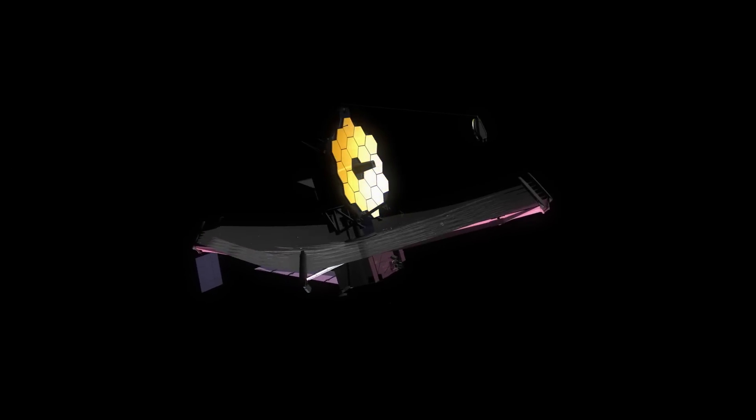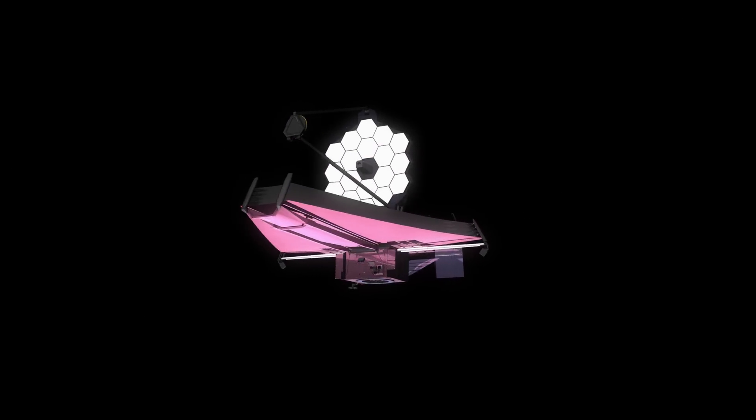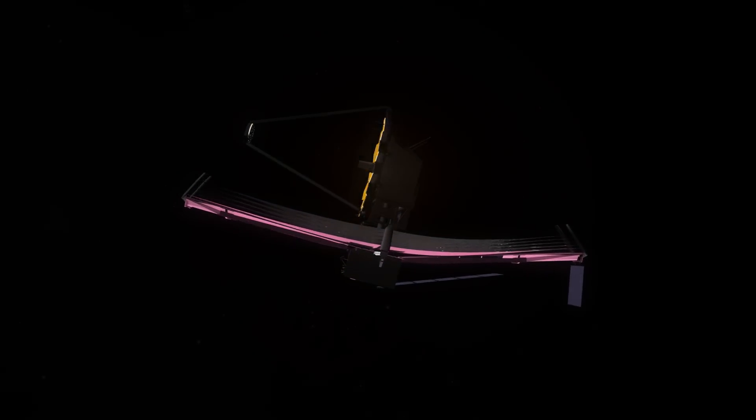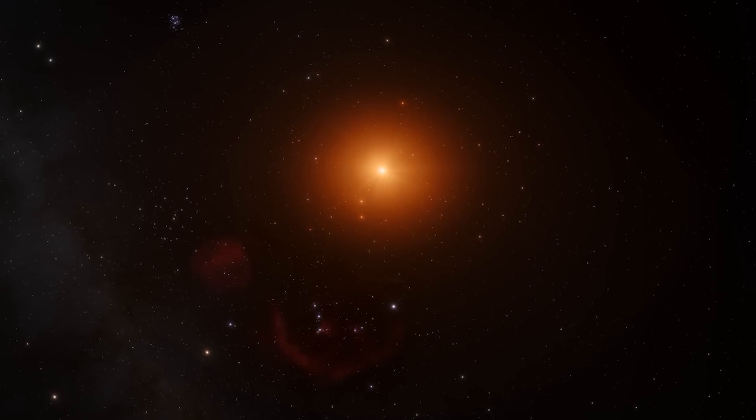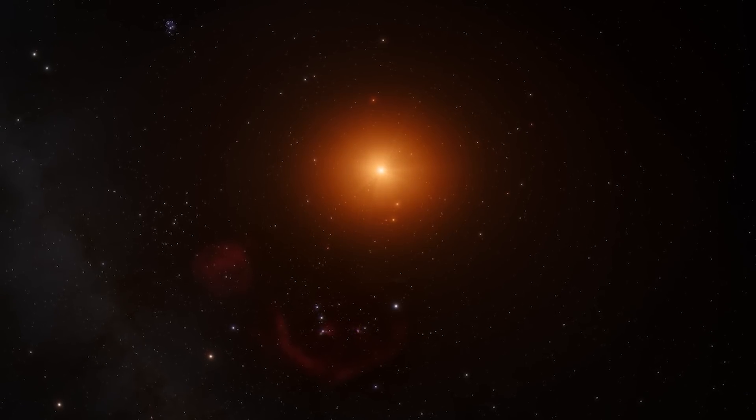Even from where JWST, the James Webb Space Telescope, is circling at L2, the closest of these potentially habitable planets are still tens of light years distant.